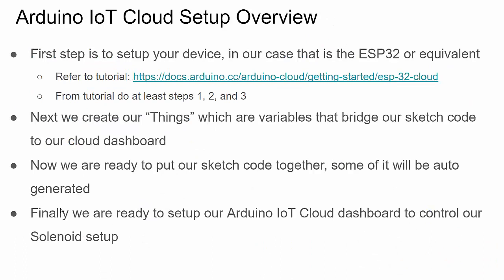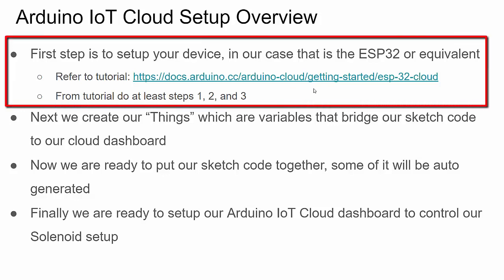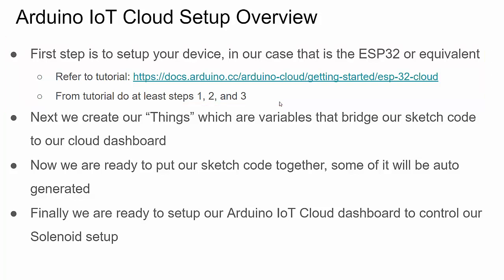This slide gives a quick bulleted list of what we need to set up at a high level in the IoT cloud. The first thing is setting up our device — our ESP32, our Wi-Fi network information, and things like that. Instead of covering it all here, I'm going to recommend a great tutorial linked in the description. I recommend doing at least steps one, two, and three — you can do the whole tutorial, it's pretty simple.